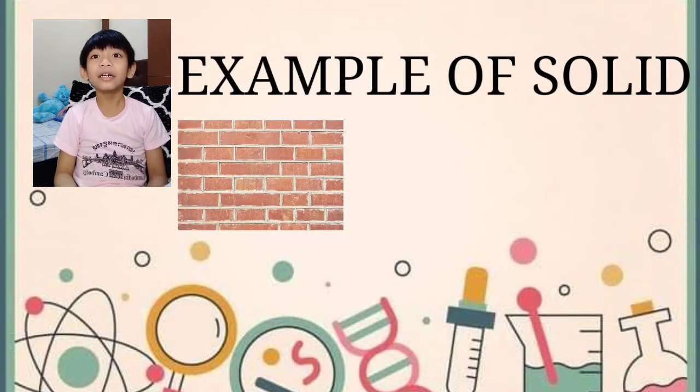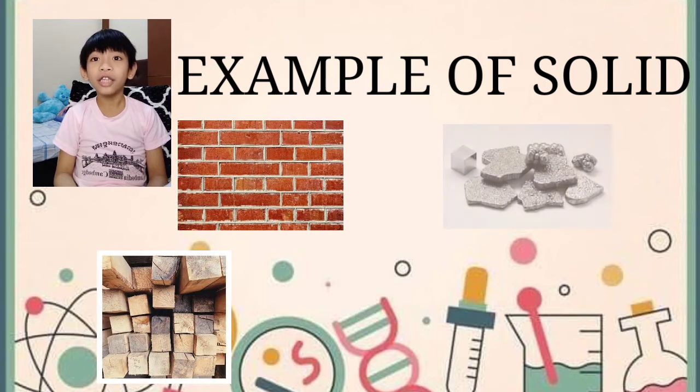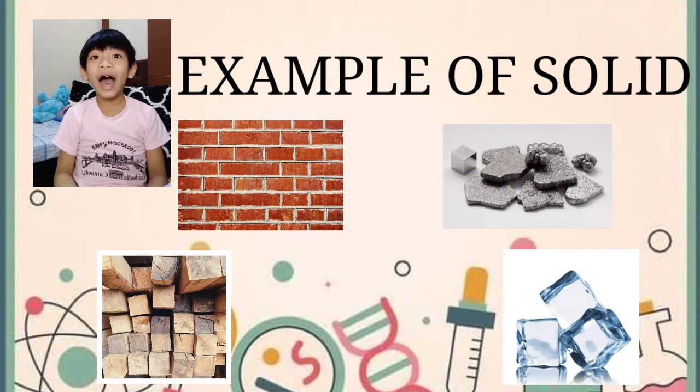Examples of solid: brick, wood, iron, and ice. When ice melts, it becomes liquid.